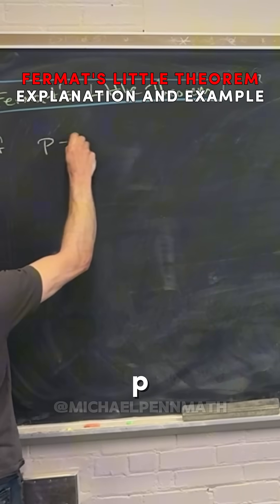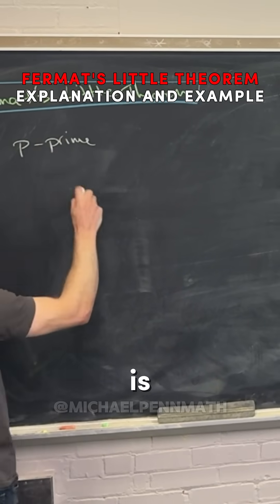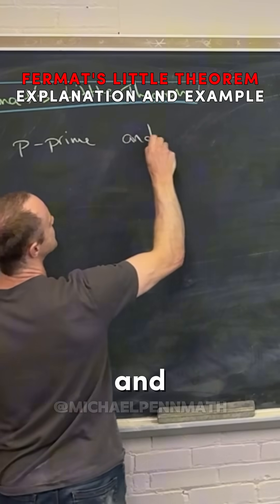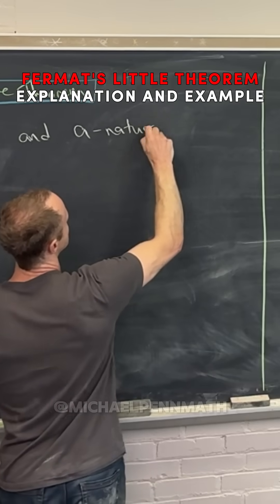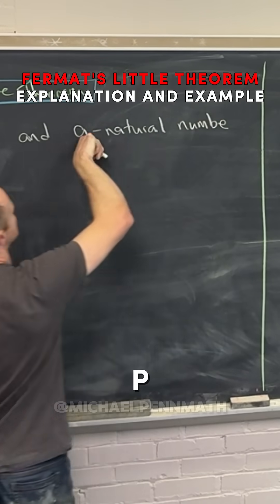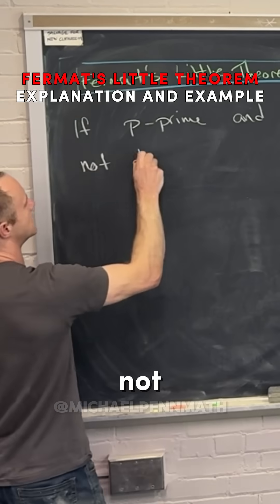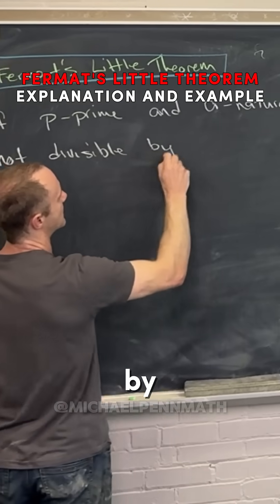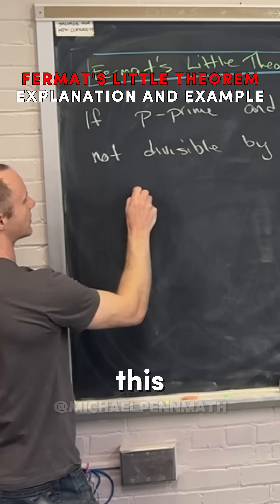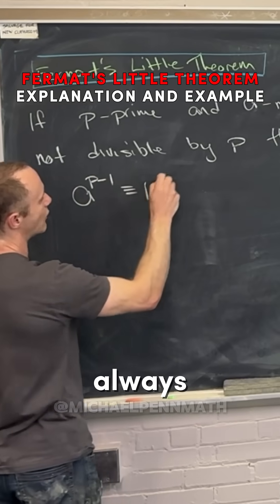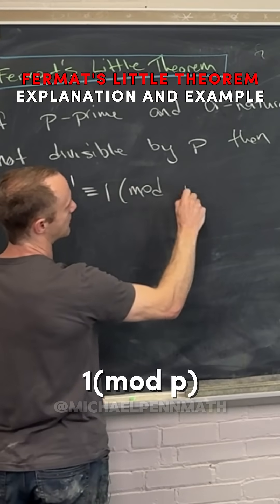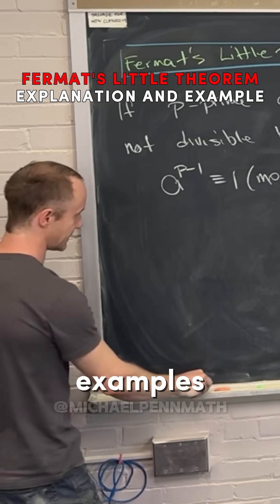So if p is a prime and a is a natural number which is not divisible by p, then if you do this calculation a^(p-1), you always get the number 1 mod p. So we could do some little examples of this.